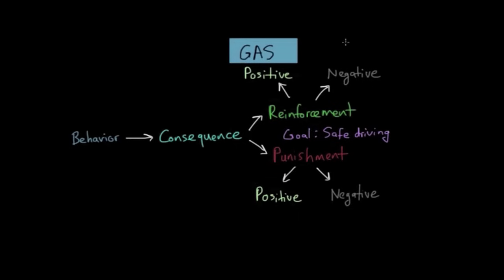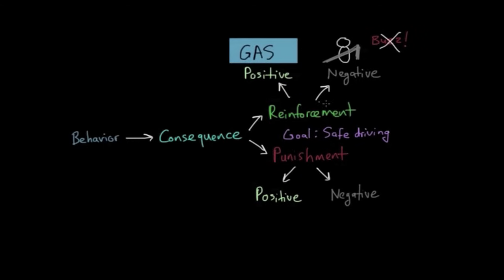A really common example is when you get into your car before you put your seatbelt on, sometimes you'll hear a loud buzzing sound — it's very annoying. That buzzer just keeps going until you perform the behavior of putting on your seatbelt. Performing that behavior takes away the sound of the buzzer. That taking away of the buzzing sound is the negative of negative reinforcement — something is being taken away in an effort to increase the behavior of safe driving.